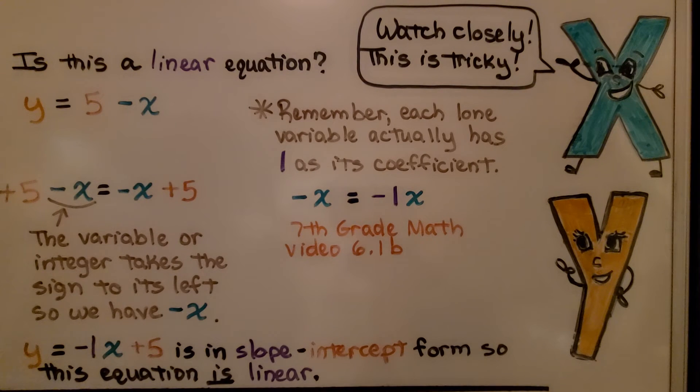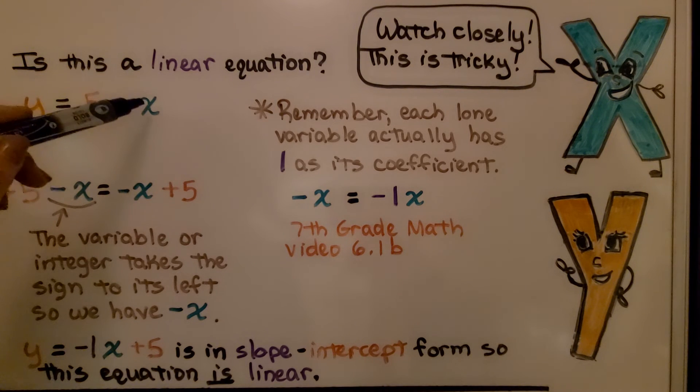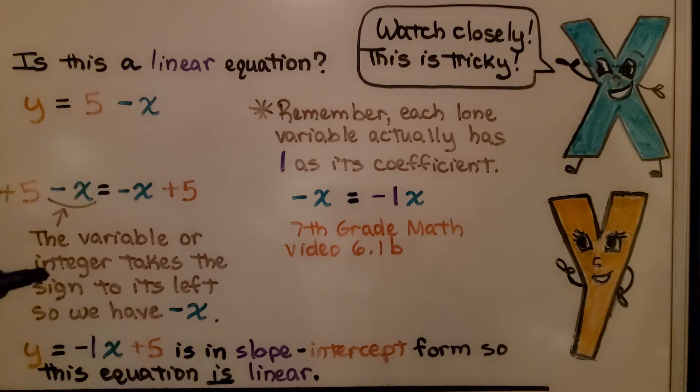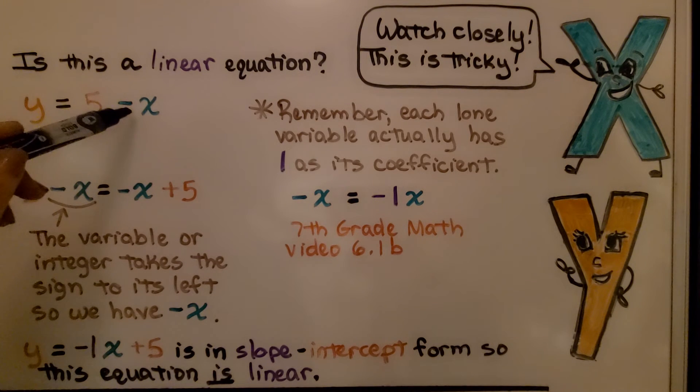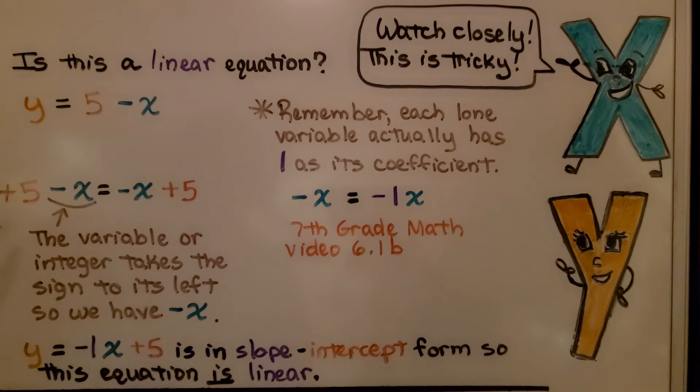You're going to really have to pay attention here because this is going to get a little tricky. Is this a linear equation? Well now look, our y-intercept b is over here and here's our x value. Now this is a positive 5. This is a negative x. The variable or integer takes the sign to its left so that negative sign belongs to the x. We have negative x.